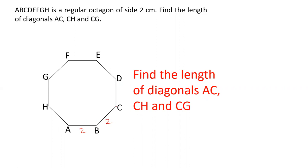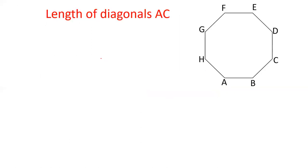For example, there are three diagonals AC, CH, and CG. Although there are many, these are the three diagonals of different length. The other diagonals are of the same length — for example, BD equals AC, CE equals AC, and BE equals CH. So three distinct length diagonals are AC, CH, and CG. Let us see how to calculate the length of these diagonals.